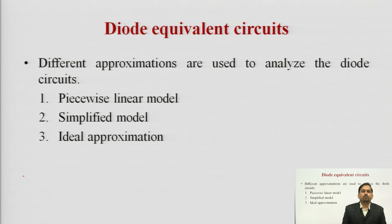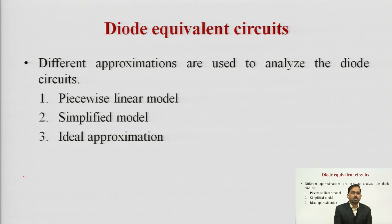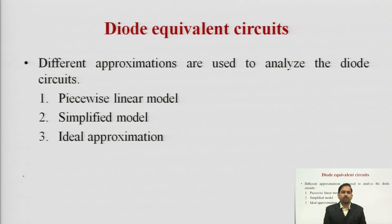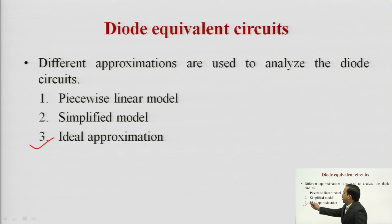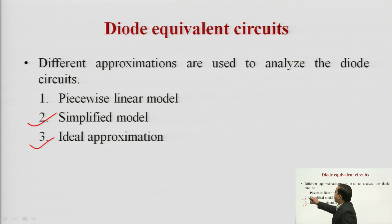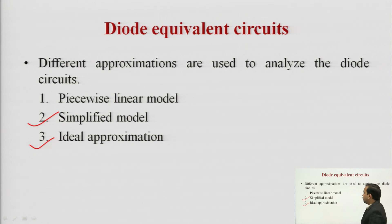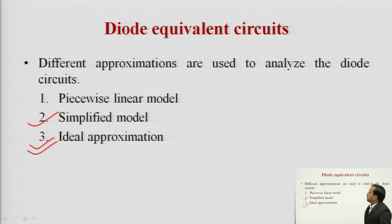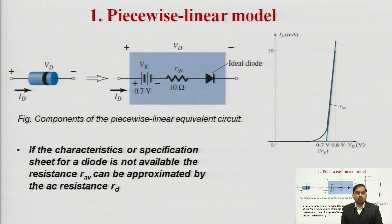The equivalent circuit can be categorized and learned in three different manners. First is the piecewise linear model, after that we will see the simplified model, and after that we will see the ideal approximation. In most of the numericals we can use the simplified model, but for power supplies we can use the ideal approximation. What is the diode equivalent circuit corresponding to the piecewise linear method?